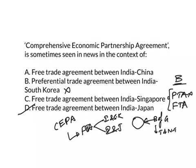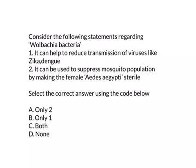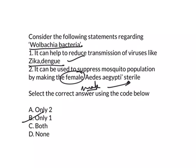Please read the answers carefully and try to avoid this type of mistake. The second question is: consider the following statements regarding Wolbachia bacteria. It can help to reduce transmission of viruses like Zika and Dengue. It can be used to suppress mosquito population by making the female Aedes aegypti sterile. The second statement is wrong — it is the male mosquito that is made sterile. So the answer is B, 1 only. The first statement is correct and the second statement is wrong.